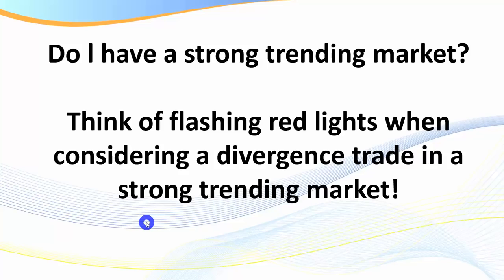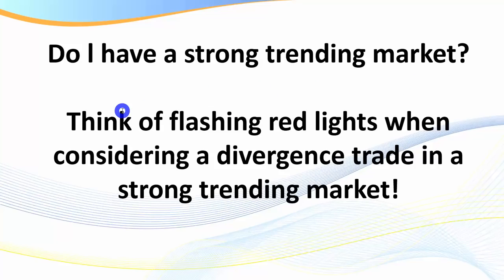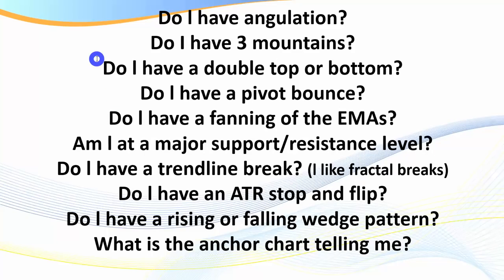One of the most important rules for staying out of a potential divergence trade is this: do I have a strong trending market? This is where it's easy to get absolutely hammered if you're a counter-trend trader or trying to pick a top or a bottom. I want you to think of flashing red lights when considering a divergence trade in a strong trending market. If you're in a strong trending market, just be very aware — it's really easy to be chopped up.